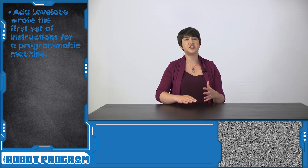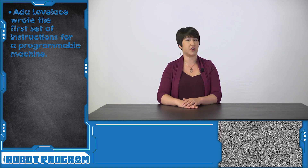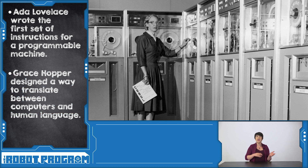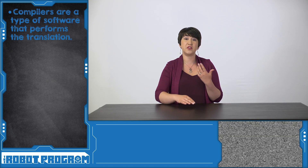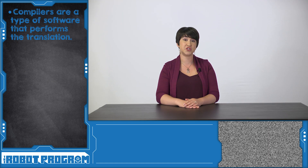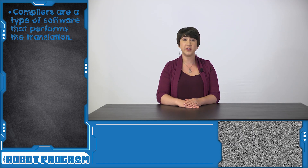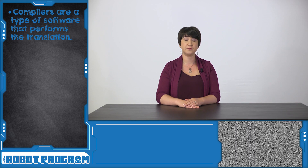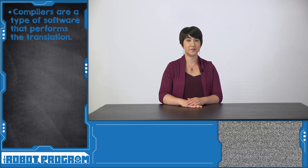Once electronic computers were invented, lots of innovation in programming started to happen. In the 1950s, Admiral Grace Hopper came up with an idea to translate between what computers did and a higher level programming language that looked closer to English, like what we use with Blockly or RoboScratch. We call this translation software a compiler.